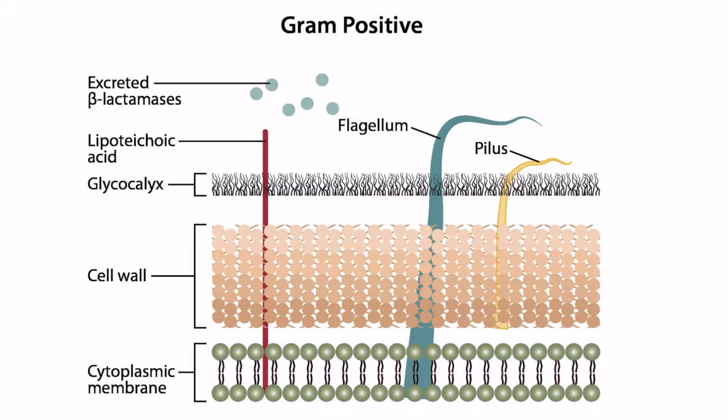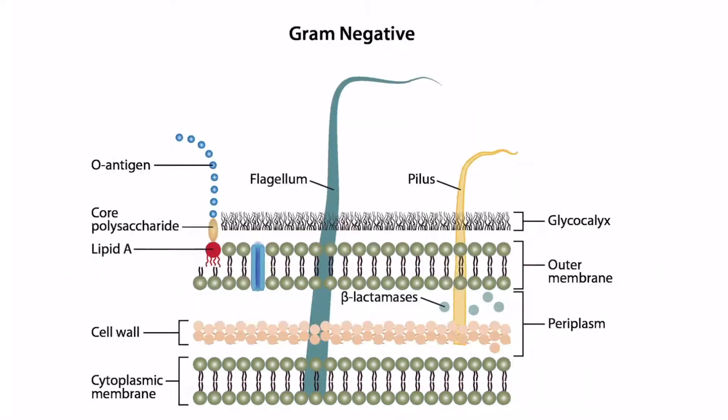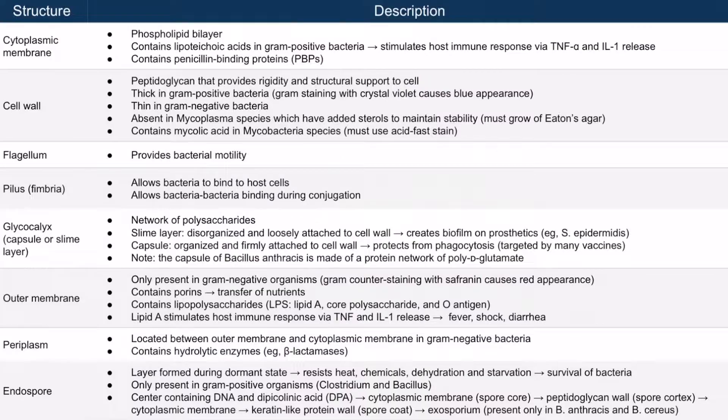Looking at the gram-positive bacteria, we can see that this cell wall is very thick, whereas in gram-negative bacteria, the cell wall is very thin.